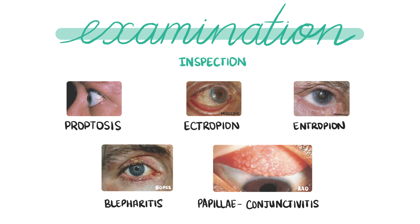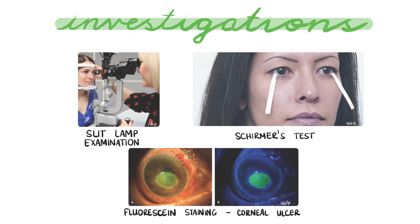Inspect the eyelids for proptosis, ectropion, or entropion, which can cause dry eyes. Also evert and look at the inner eyelids for flakes and crusting seen in blepharitis, or papillae seen in conjunctivitis. Eye examination is usually normal in dry eye syndrome; however, it's important to examine the eye using fluorescent drops and a blue light to look for corneal staining to rule out corneal ulcer. To formally diagnose dry eye syndrome, you will need to refer the patient to secondary care for a slit lamp examination and a Schirmer's test, which measures the amount of tears produced.